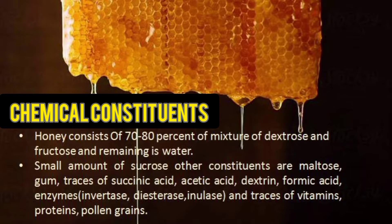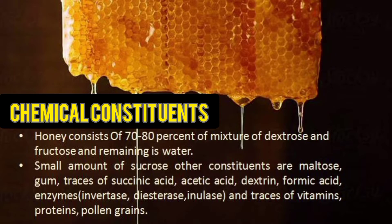This is the honey-making process you are seeing on screen. Honey bees go and extract nectar from flowers, and they build their own hive — the empty beehive picture is also shown. Apiculture, which is the rearing of honey bees, is a good business, and many people do this as a cottage industry.